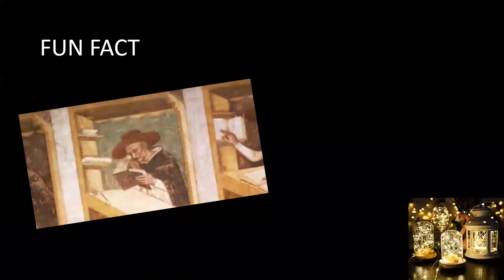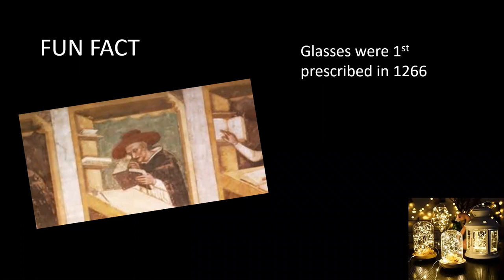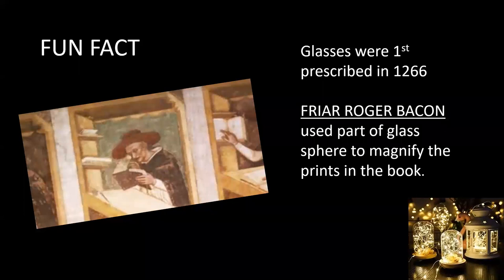Let's start with a fun fact: when were glasses first ever prescribed in the history of ophthalmology? The answer is 1266 — Friar Roger Bacon used a part of a glass sphere to magnify prints in a book, and this is how glasses were prescribed later.